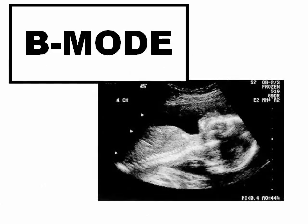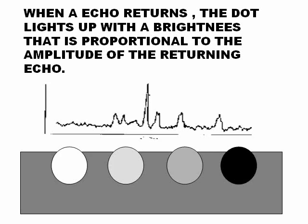That produces B-mode, which is when the machine changes the amplitude for bright mode. When an echo returns, the dots light up with a brightness that is proportional to the amplitude of the returning echo. More amplitude means a brighter dot. On the contrary, no echo is produced in anechoic areas, so the color of the screen is dark — anechoic is dark.